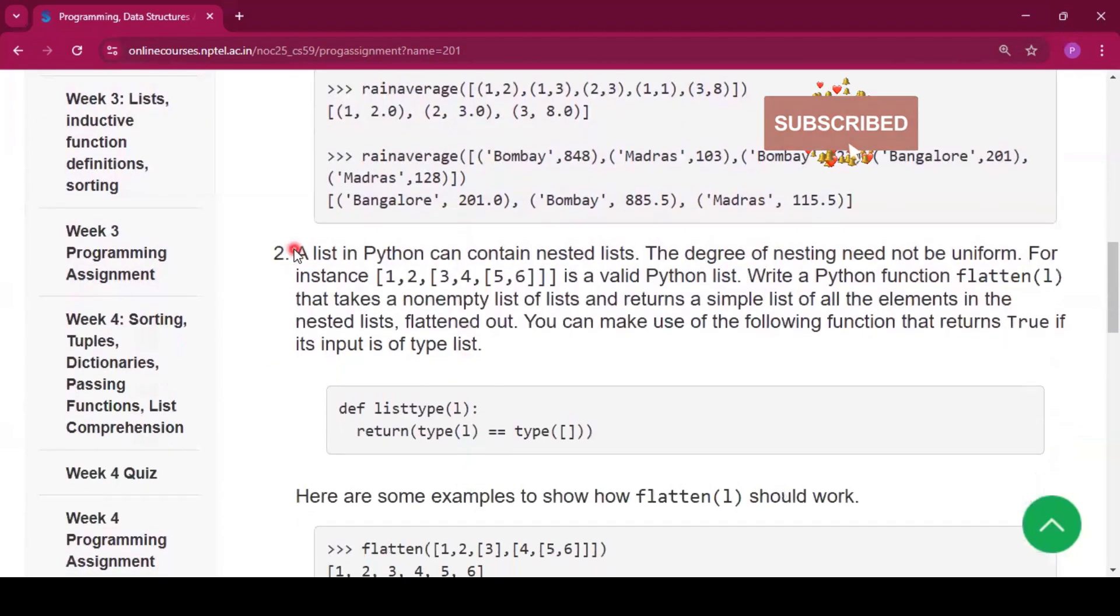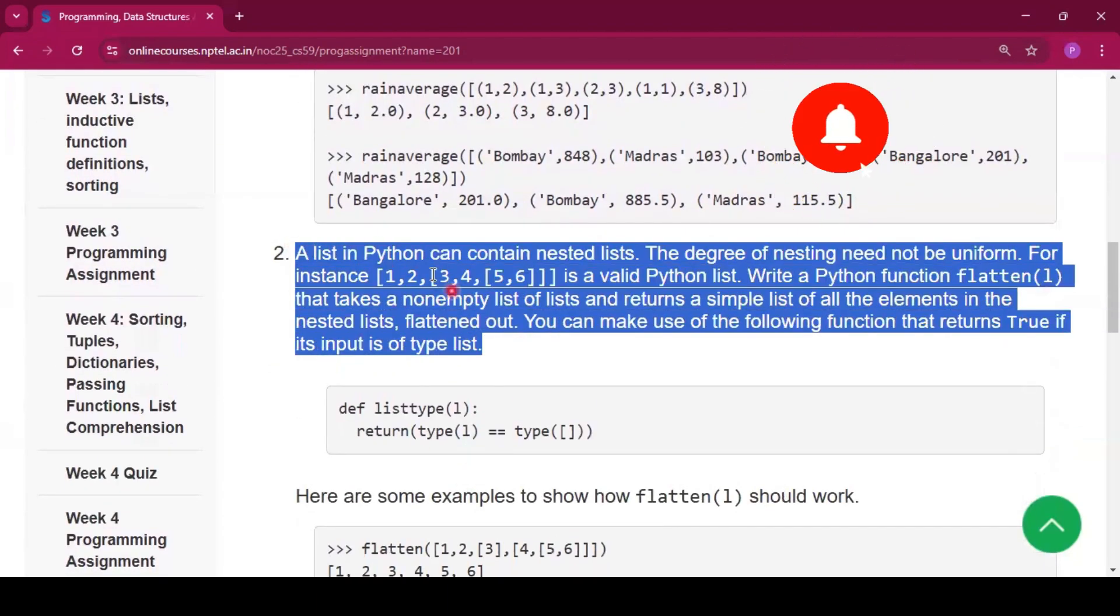Now in the second function, a list in Python can contain nested lists. The degree of the nesting need not be uniform. For instance, [1, 2, [3, [4, [5, 6]]]] is a valid Python list.